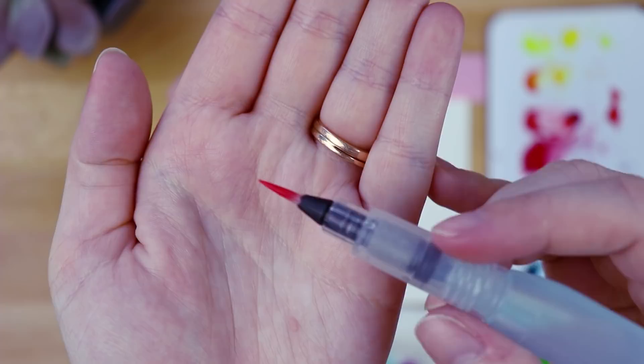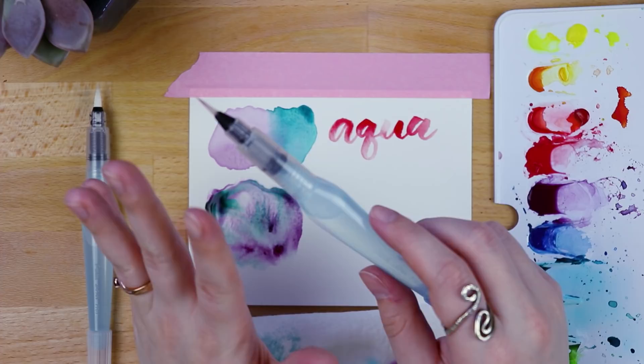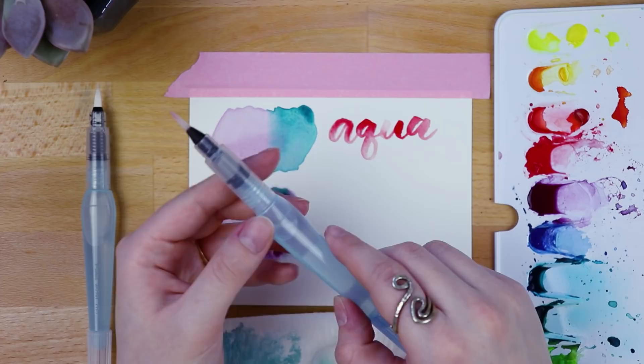Now I'm not going to demonstrate this because these are brand new and they're nice and clean on the inside, but something that you can do with the Aquash water brush pens is not have clean water on the inside, but instead fill it with a diluted or non-diluted ink. You can maybe fill this with black and use this for a black ink brush pen.